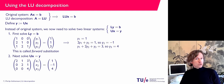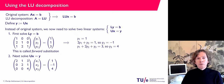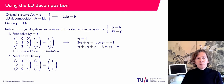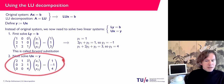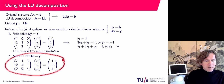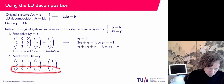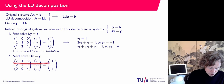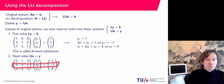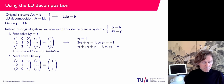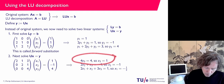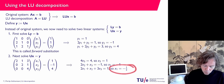Next I solve Ux equals y. I've just found y: the vector one, minus one, four. This system is also easy because I start with the last equation: four times x3 equals four, so x3 equals one. Then the second equation involves x2 and x3, so I can solve for x2. Then the top equation gives x1. Since we start at the end and go upwards, this is called backward substitution.